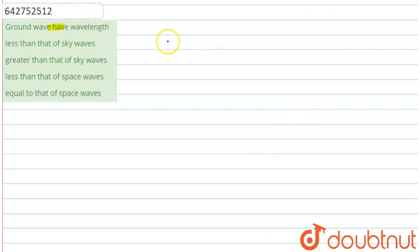We can write that for ground wave, we know that the bandwidth, that means frequency range, is equal to 530 kHz to 1710 kHz.